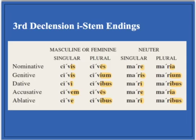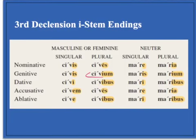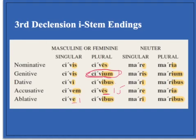Civis, civis is an I-stem for the masculine and feminine. Notice that the genitive plural is IUM. There are sometimes a couple of variations for I-stems: the ablative singular can be an I occasionally, and the accusative plural can be IS as well. But if you stick with the basic ES and E, you should be okay.